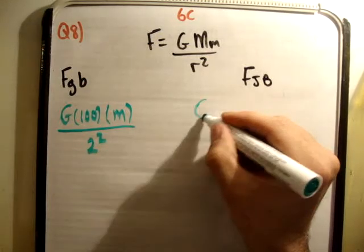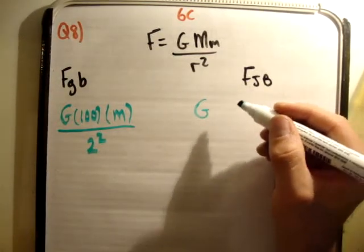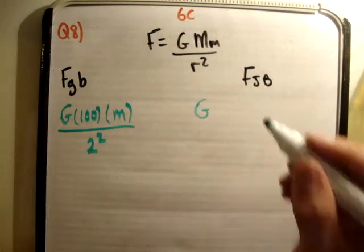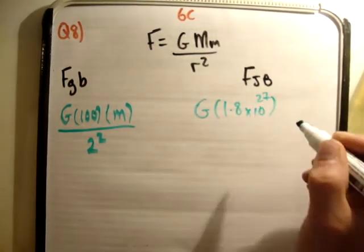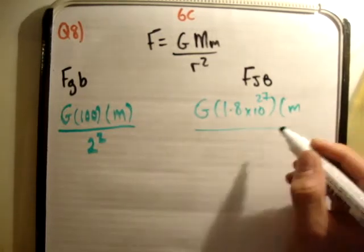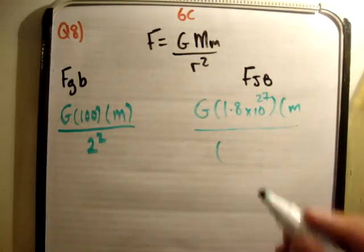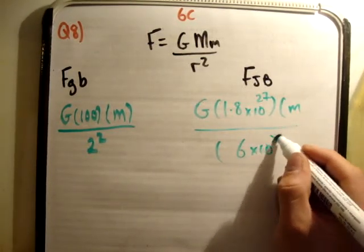Then here we have G, the mass of the planet Jupiter is 1.8 times 10 to the 27 times the mass of the baby divided by the distance squared, 6 times 10 to the 8 squared.